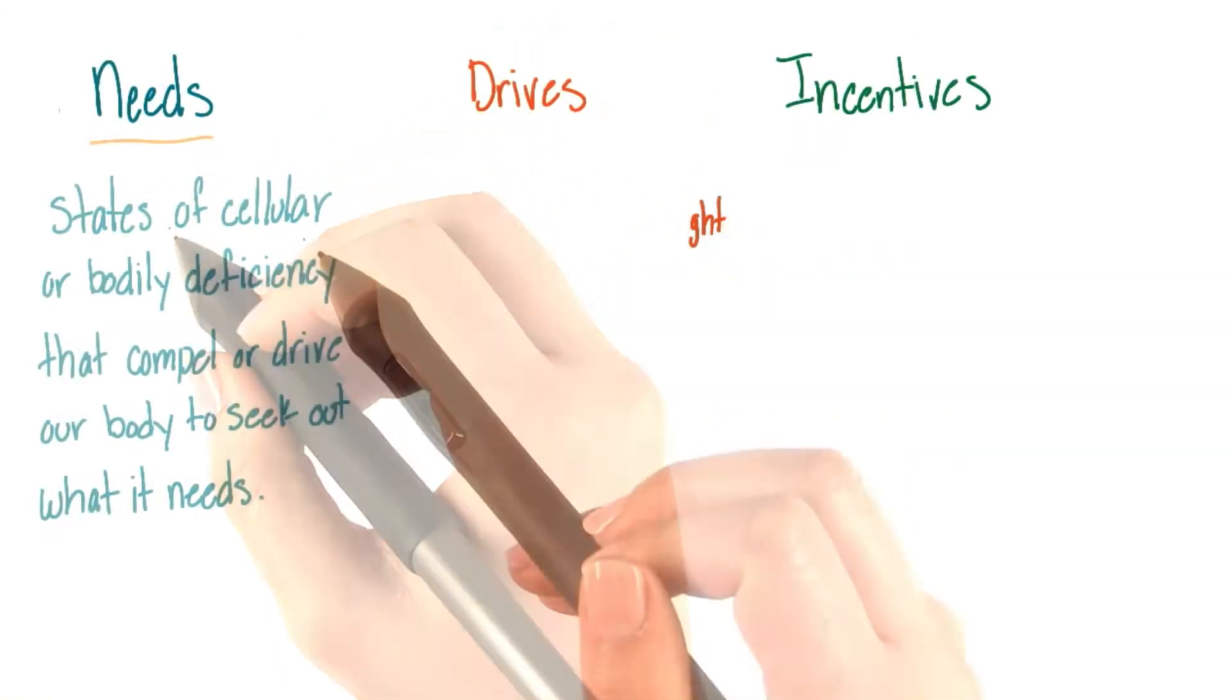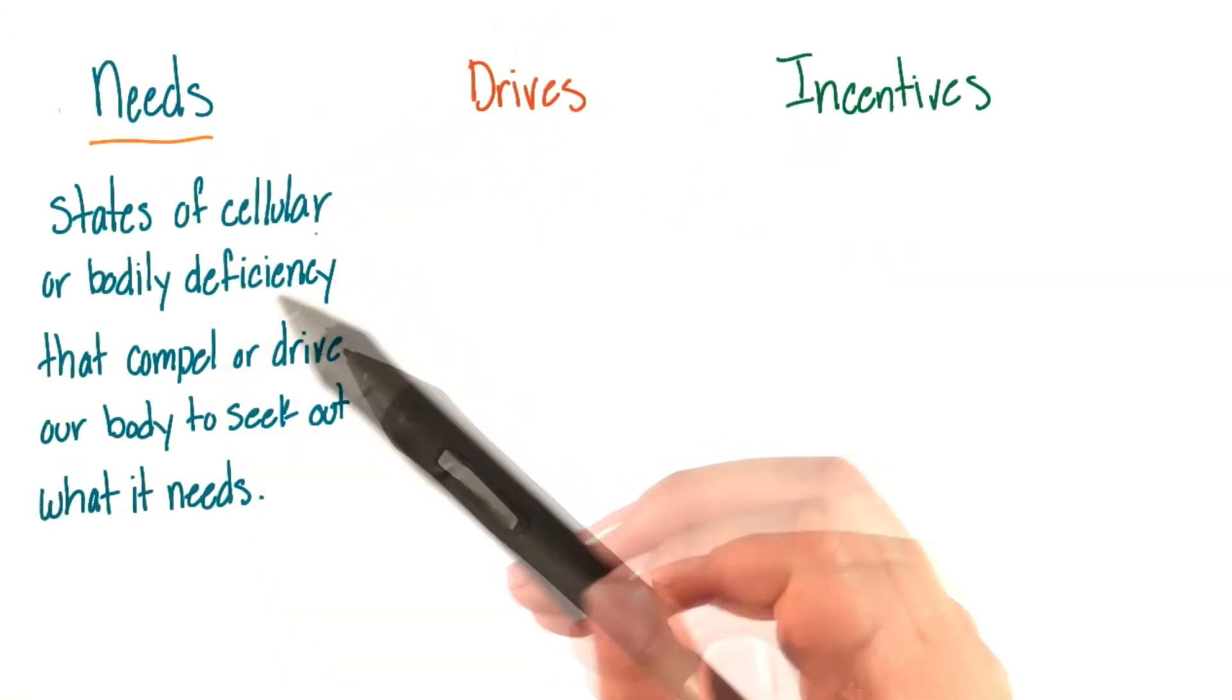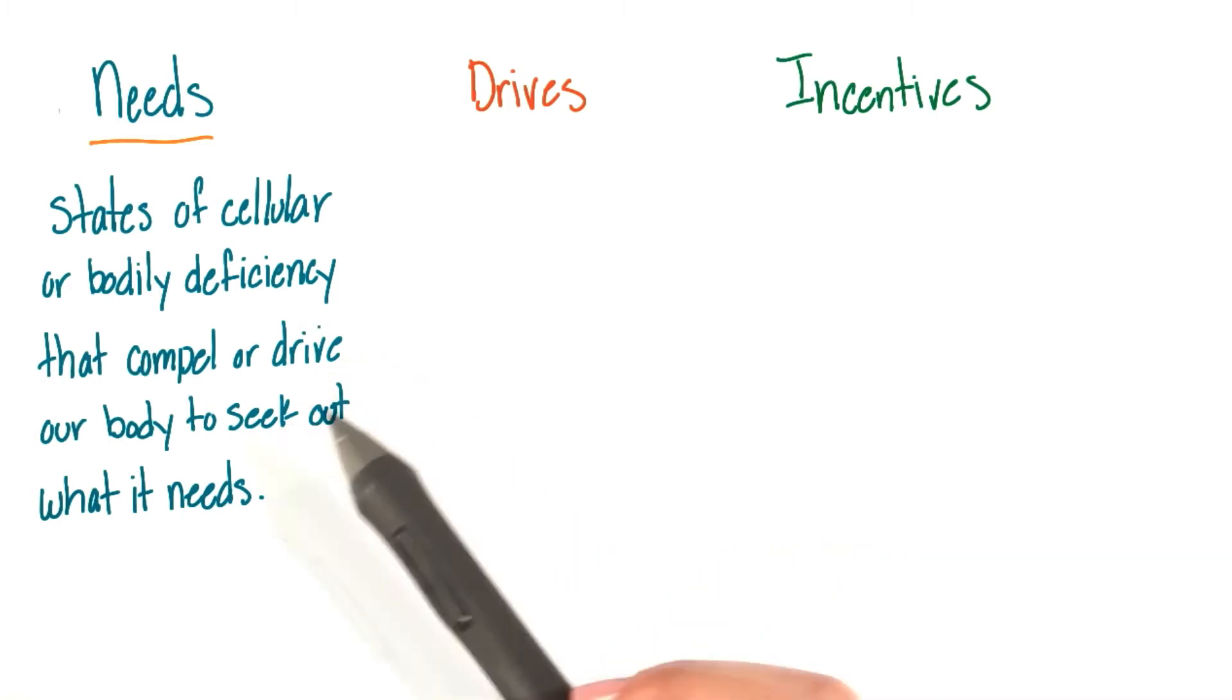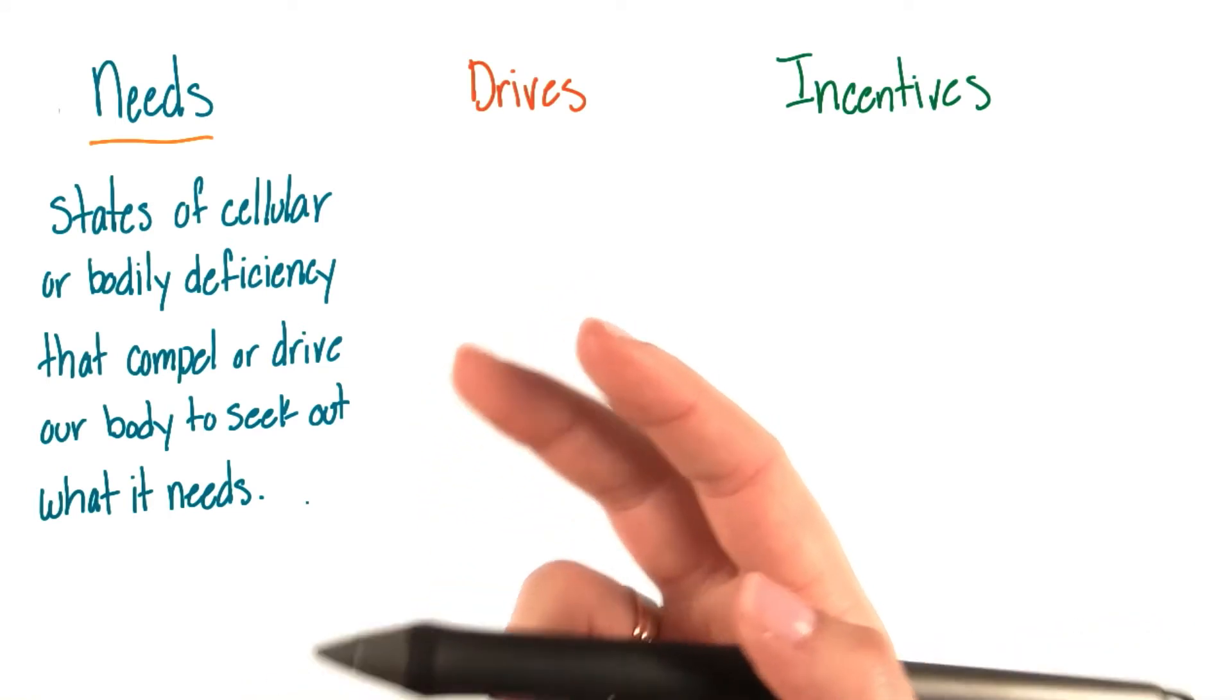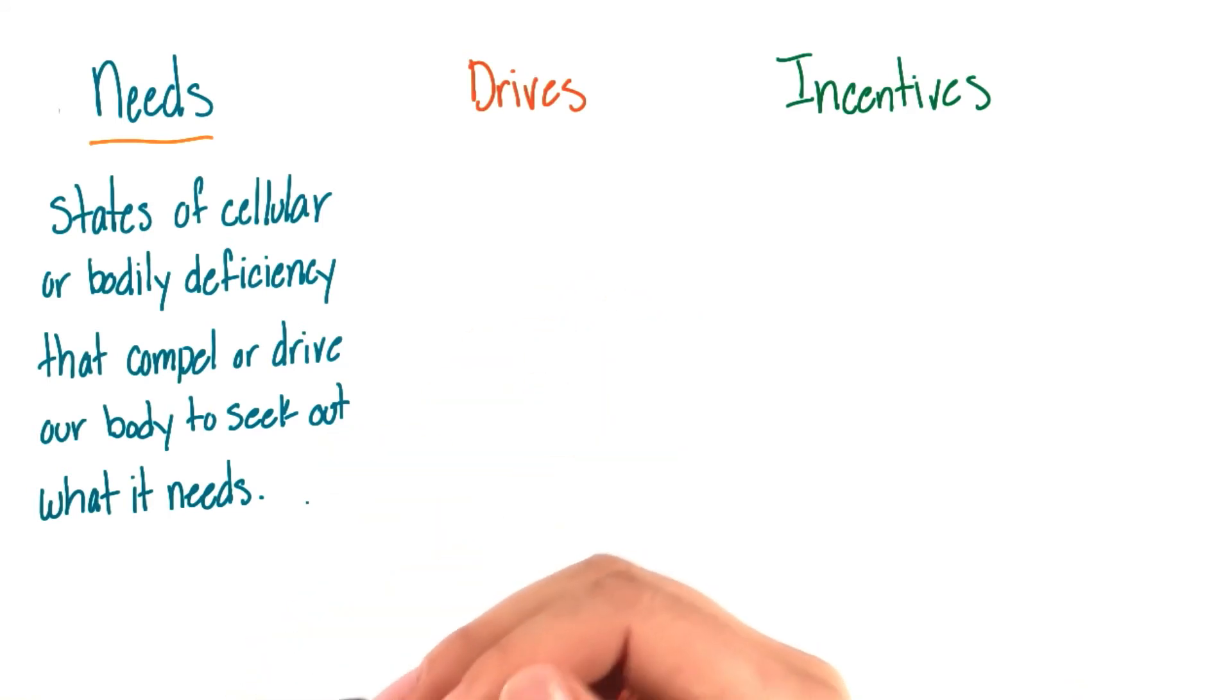First, let's start with needs. Needs are states of cellular or bodily deficiency that compel or drive our body to seek out what it needs. For example, we need food, we need liquid or water, and we need oxygen.